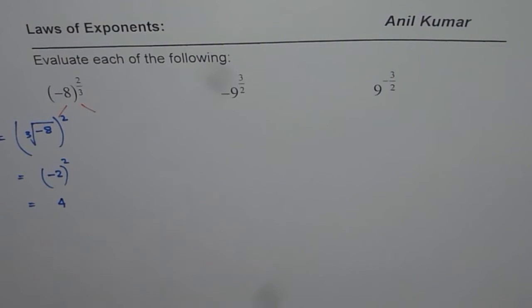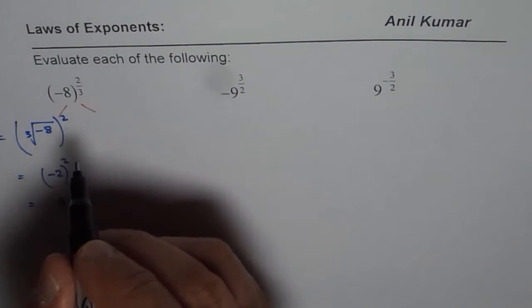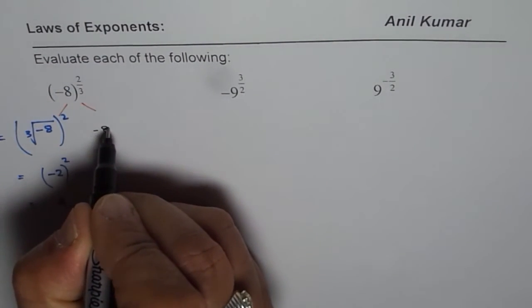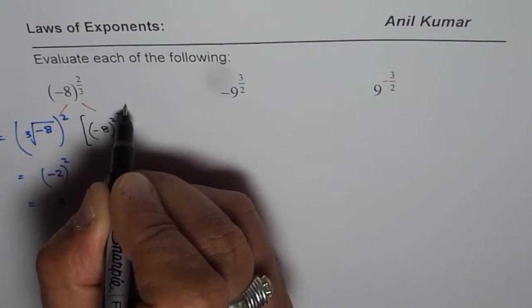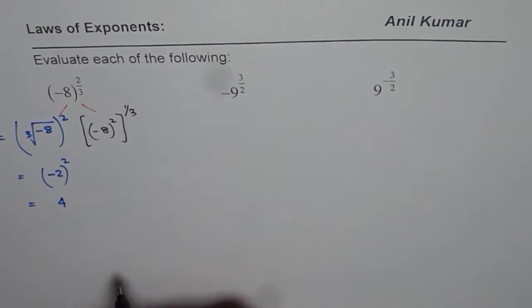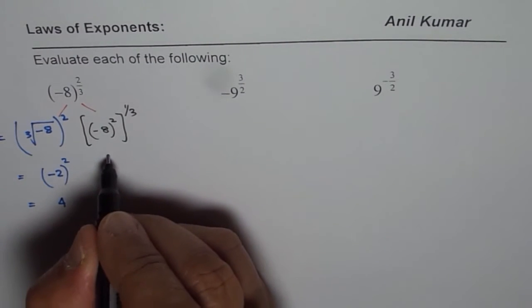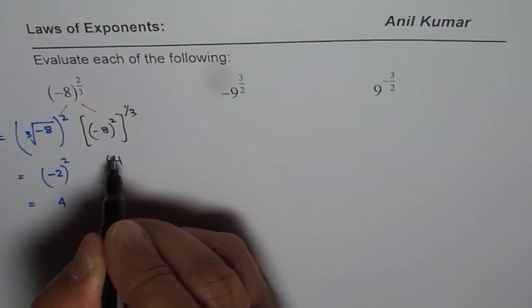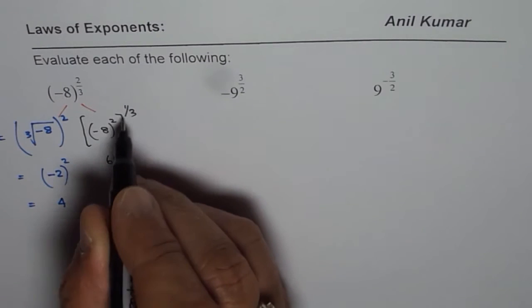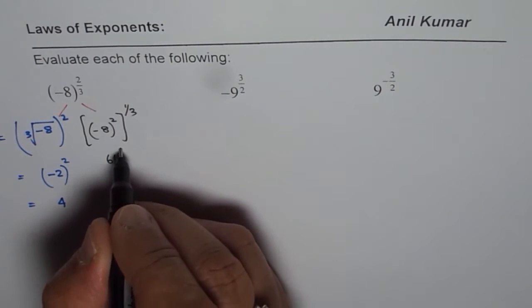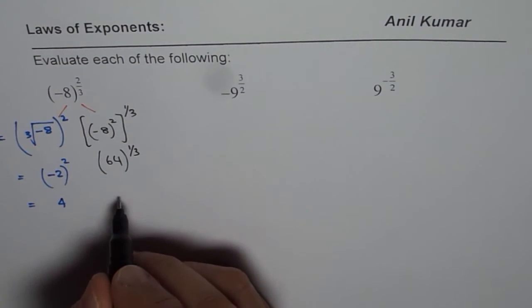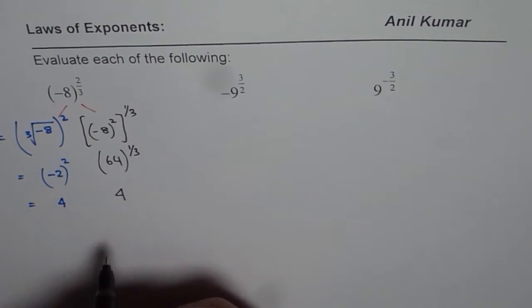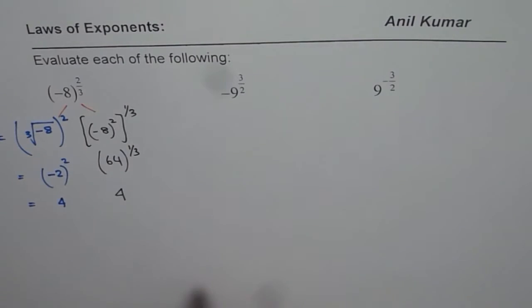The other way is that we could actually square it first. So we could write this as minus 8 whole square, and then we will do cube root. So you could do either way. Now here we get 64. Square of a negative number is positive. And then cube root. So you could write 1 over 3 also. And that is cube root. And cube root of 64 is indeed 4. So we get exactly the same solution.